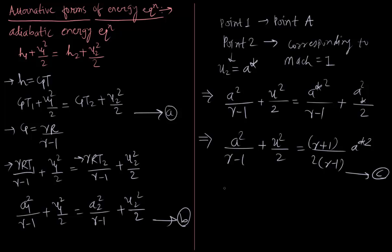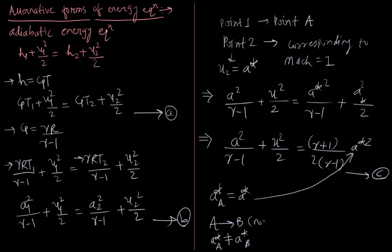Remember that the actual flow field itself does not have to be adiabatic from point 1 to point 2. Here A* is associated with point A, so we write it as A*_A. If the process from point A to point B is non-adiabatic, then A*_A will not equal A*_B. But if the whole process is adiabatic, then A* remains constant throughout the flow field.